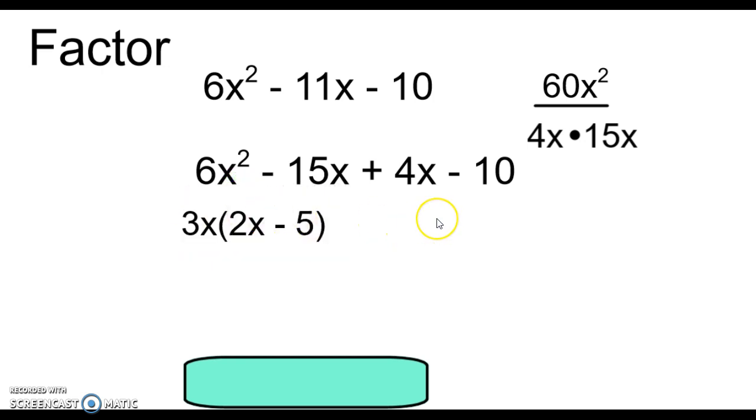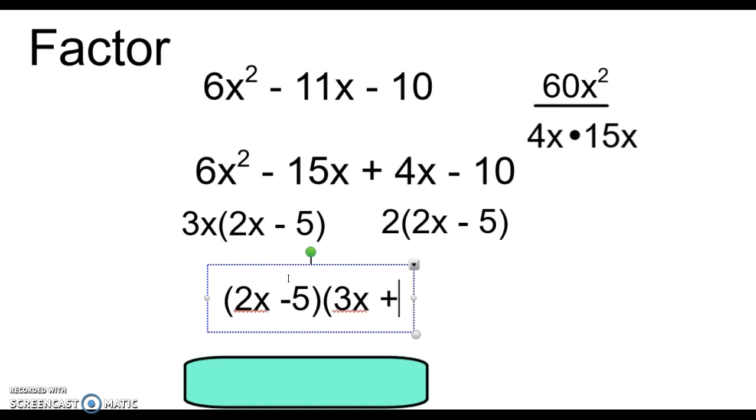Go to the next two terms. What do we have for GCF here with 4x - 10? Well, we have a 2. Take out a 2, that leaves you with 2x - 5. If both sets of parentheses match, you know that you did this problem correctly. So one set of parentheses for factoring is that matching set of parentheses. The other set is what you factored out, the 3x and the positive 2. And that's how you factor it.